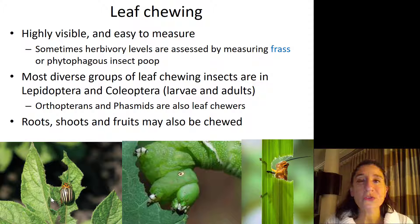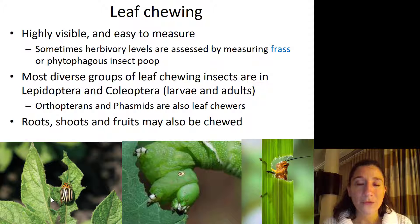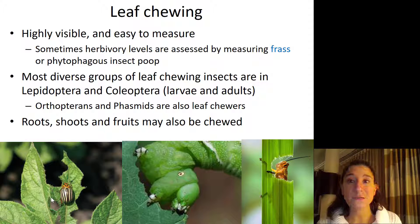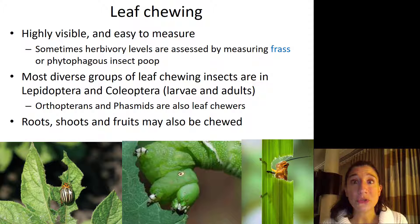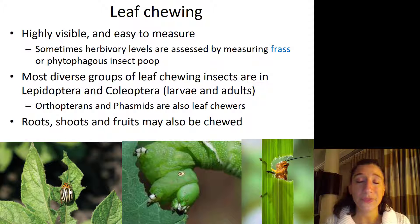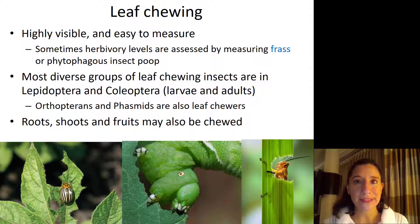The most diverse groups of leaf-chewing insects are in the Lepidoptera — butterflies and moths — and the Coleoptera — beetles. In the case of Coleopterans, it's both the larvae and the adult that can cause substantial plant damage. The Colorado potato beetle adult and its larvae both chew and do tremendous damage to the leaves of potato plants, tomato plants, and pretty much anything in the Solanaceae family.